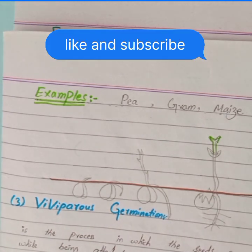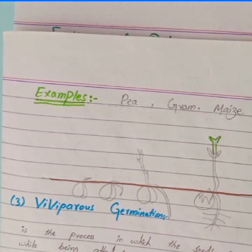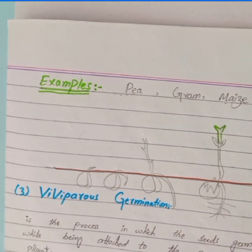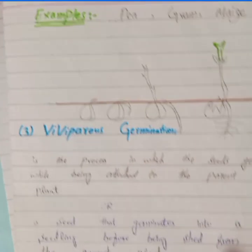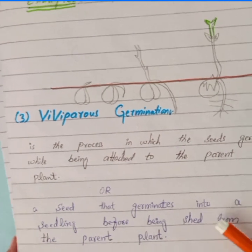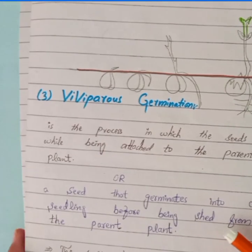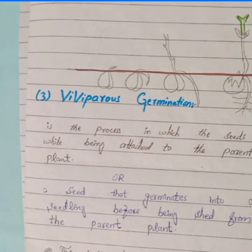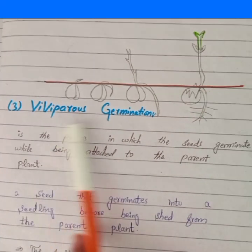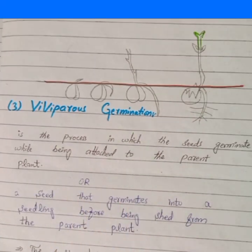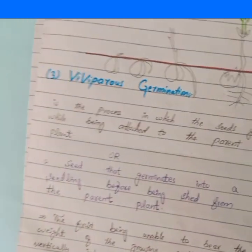This kind of germination, where the cotyledon stays underground, is known as hypogeal germination. Examples include pea seeds, gram, and maize. The third type I mentioned is the rare case, also called an abnormal kind of germination — viviparous germination.